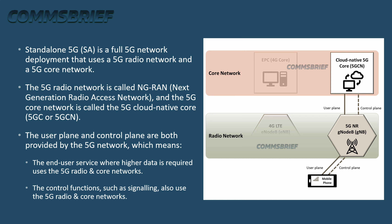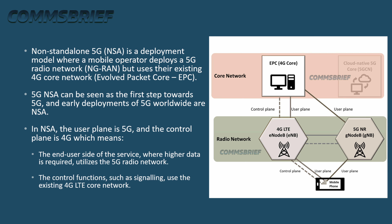Non-standalone 5G (5G NSA) is a deployment model where a mobile operator deploys a 5G radio network (NG-RAN) but uses their existing 4G core network — the Evolved Packet Core (EPC). 5G NSA can be seen as the first step towards 5G, and early deployments worldwide were NSA. In NSA, the user plane is 5G and the control plane is 4G, meaning the end-user service uses the 5G radio network while control functions such as signaling use the existing 4G LTE core network.